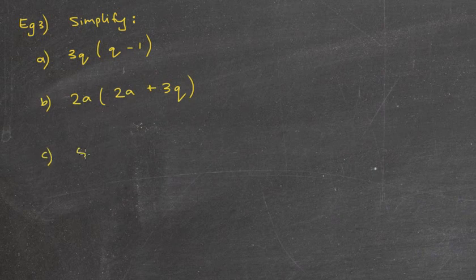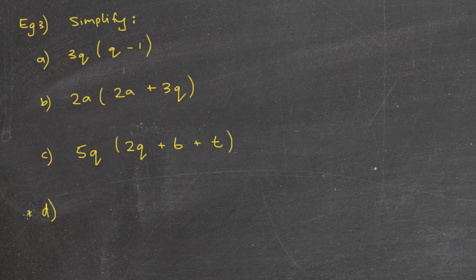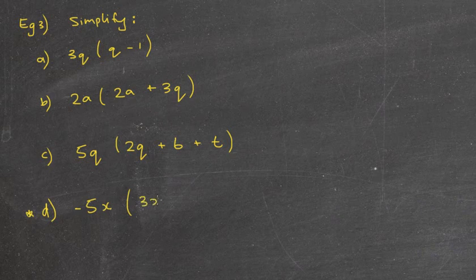We'll do 5q outside of 2q plus 6 plus t. And then the last one, which will be a bit more challenging, minus 5x outside of 3x minus 4. That will be challenging, that last one.